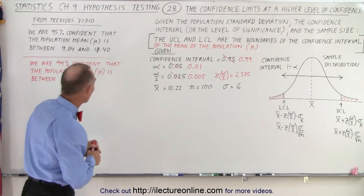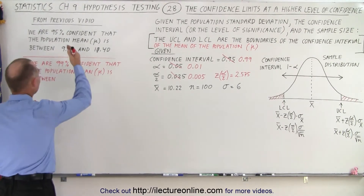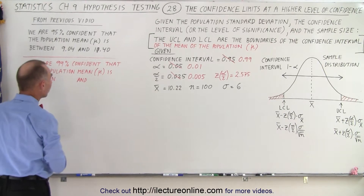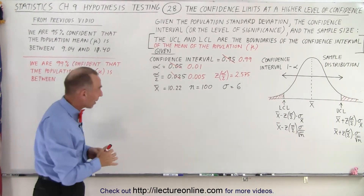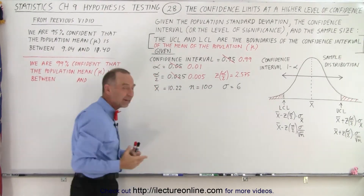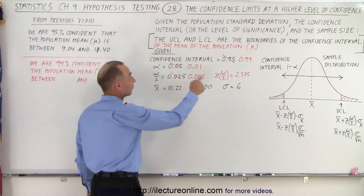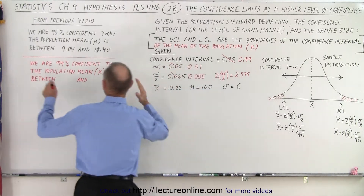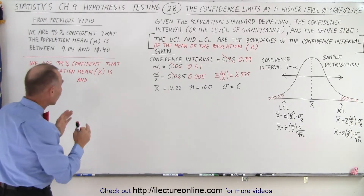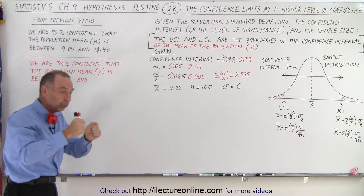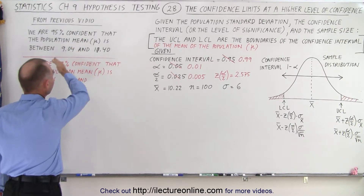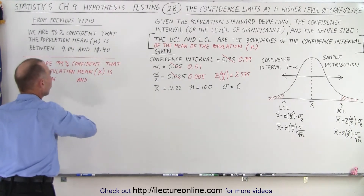In the last video, what we did was we determined that at the 95% confidence level the population mean is between 9.04 and 10.40. By taking the sample — the sample size was 100, the sample mean was 10.22, we knew that the standard deviation of the population was 6 — and we took a confidence interval of 0.95. Out of that came the upper and lower confidence limits, which showed us that we were 95% confident that the mean of the population fell between 9.04 and 10.40.